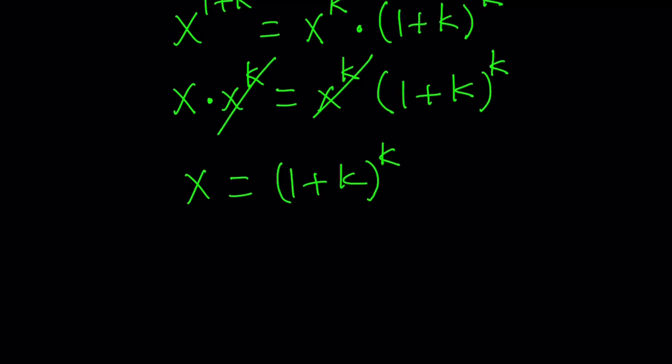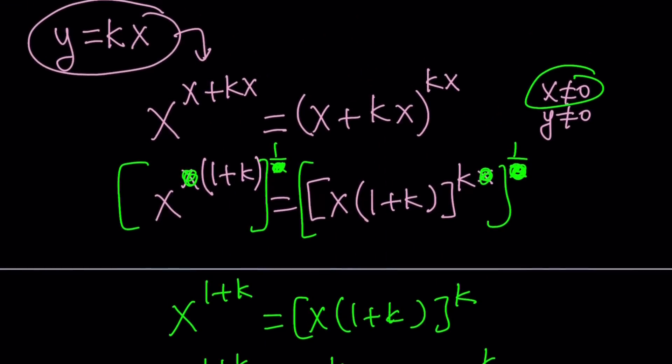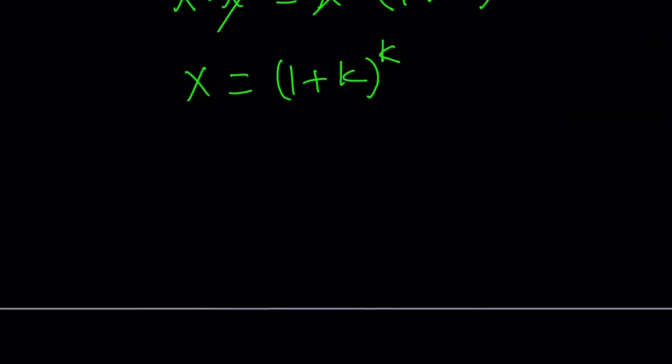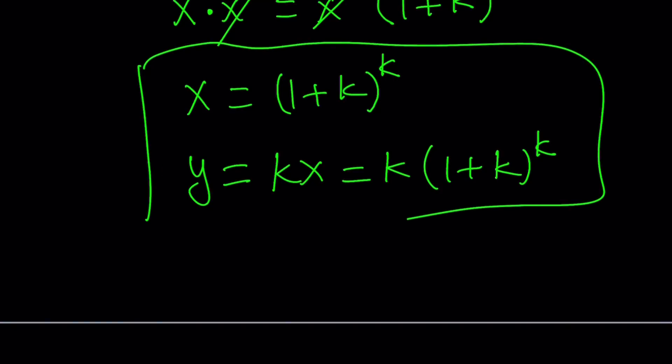But what is y? How do you find y? Well remember how we got started. We said that y equals kx. So since we now know what x is in terms of k we can find y. Y is just going to be kx which means k times one plus k to the power k. So we got the value of x and y in terms of k.